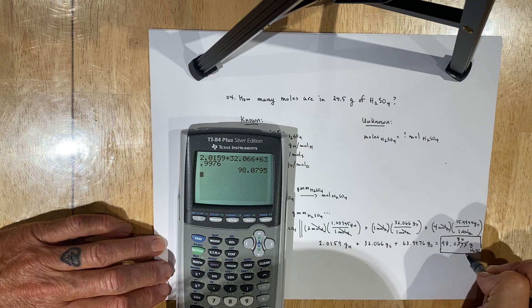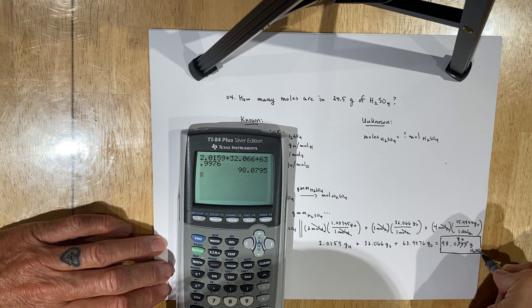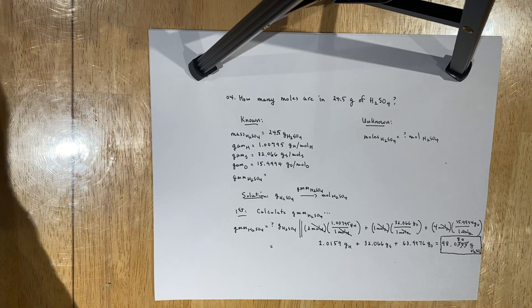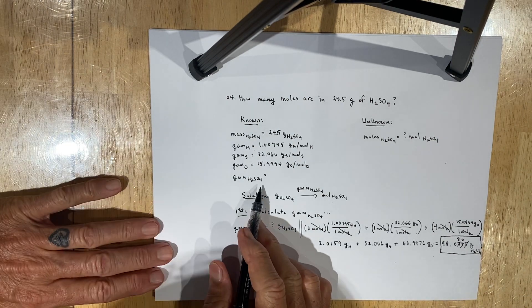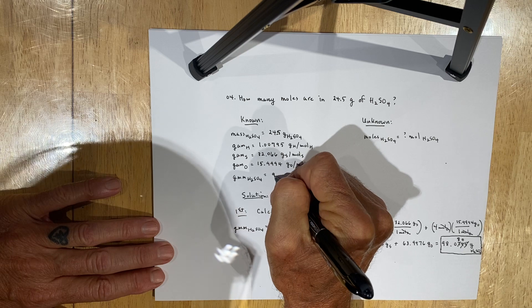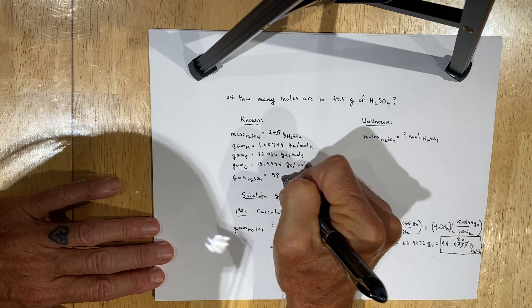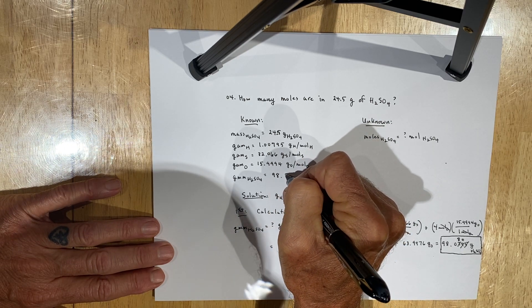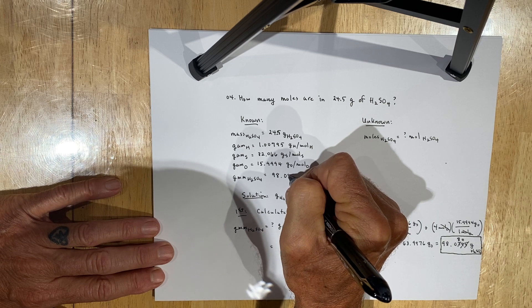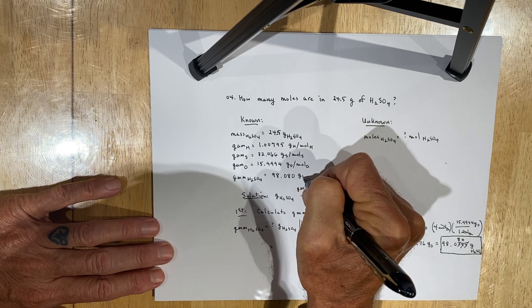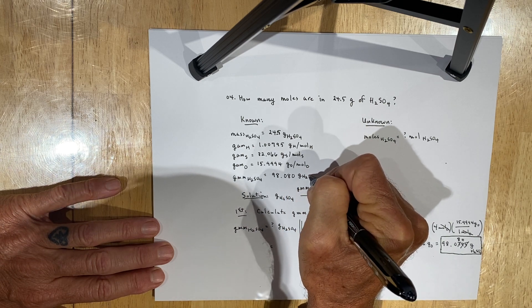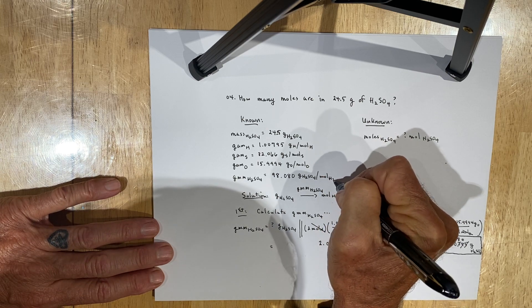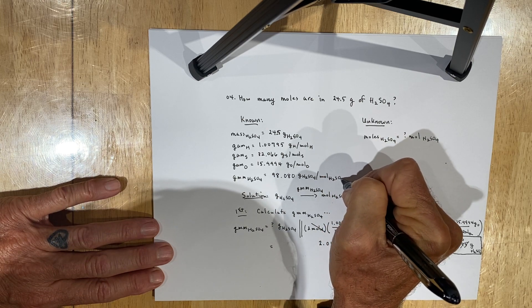Box that answer. We incorporate it into our known section: the gram molecular mass of sulfuric acid is 98.080 grams of H₂SO₄ per mole of H₂SO₄.